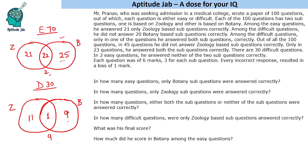First question: in how many easy questions were only botany sub-questions answered correctly? The answer is 25. Second question: in how many questions were only zoology sub-questions answered correctly? Only zoology across all questions is 21 plus 11, which gives 32.